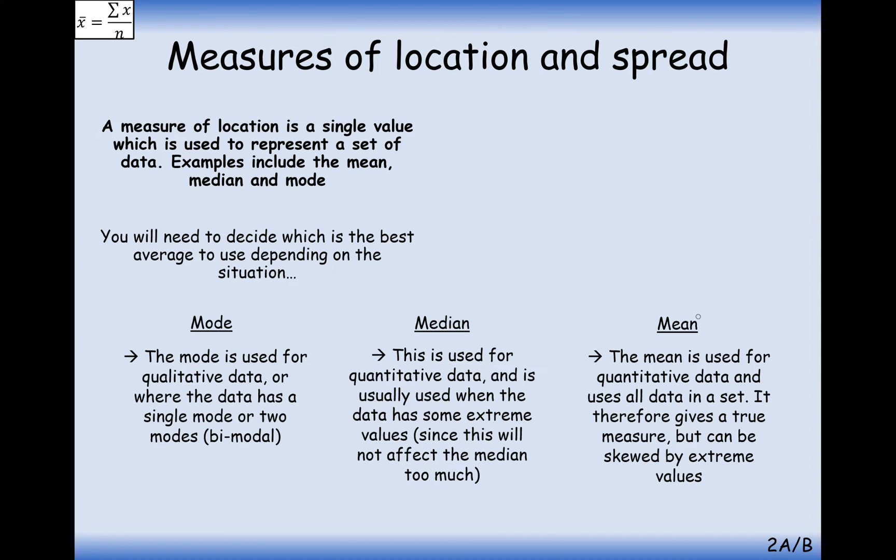So where we can, we're going to try and use the mean, but where there are extreme values, we're going to have to get to a slightly less accurate average in the median, but it is effectively going to not be skewed by those larger or smaller values. And the mode here really would just use it for qualitative data.